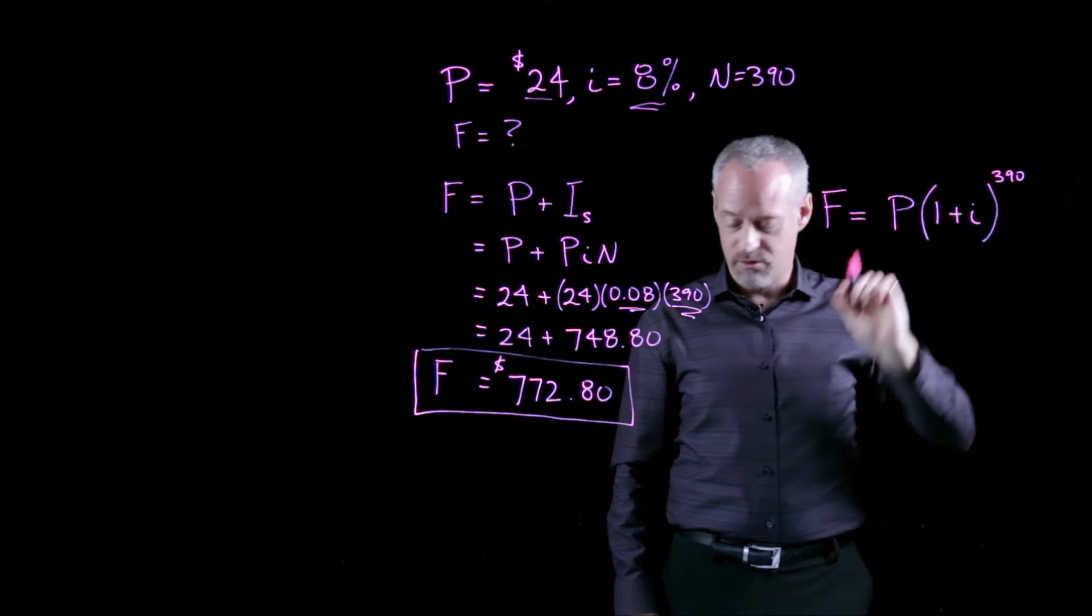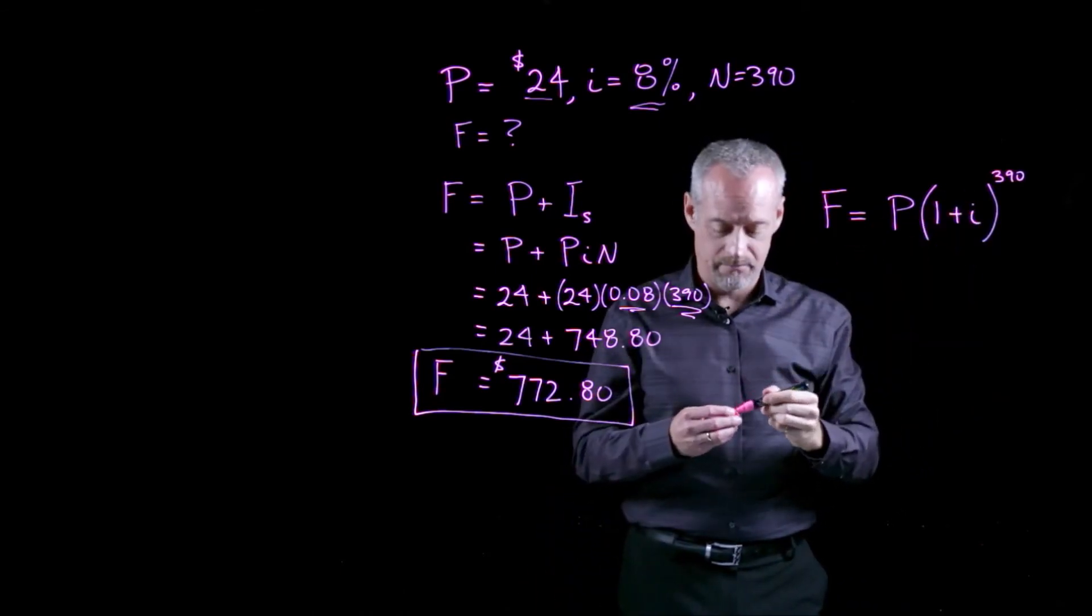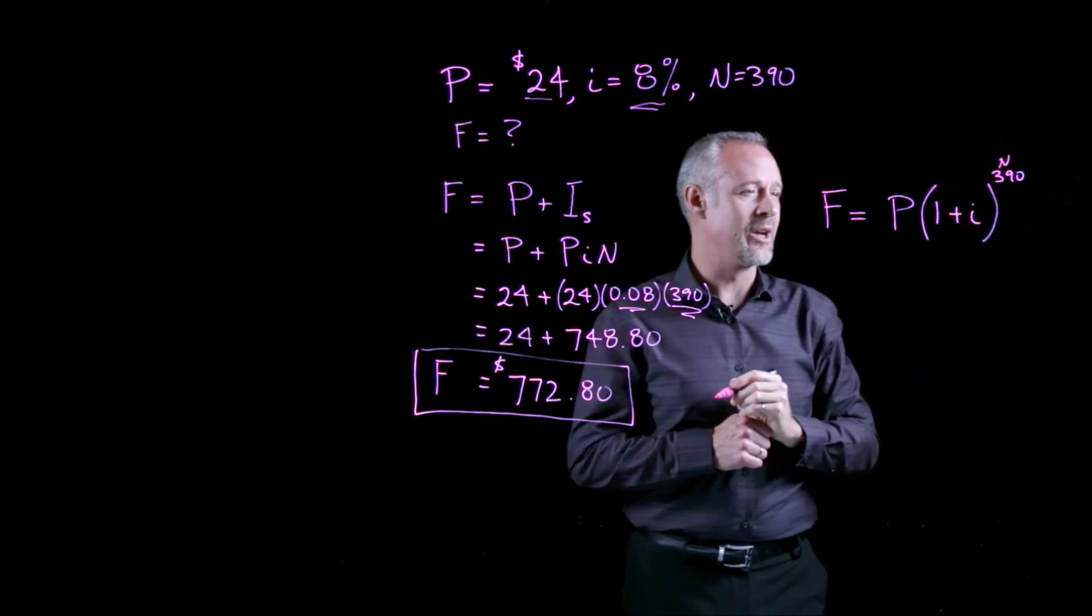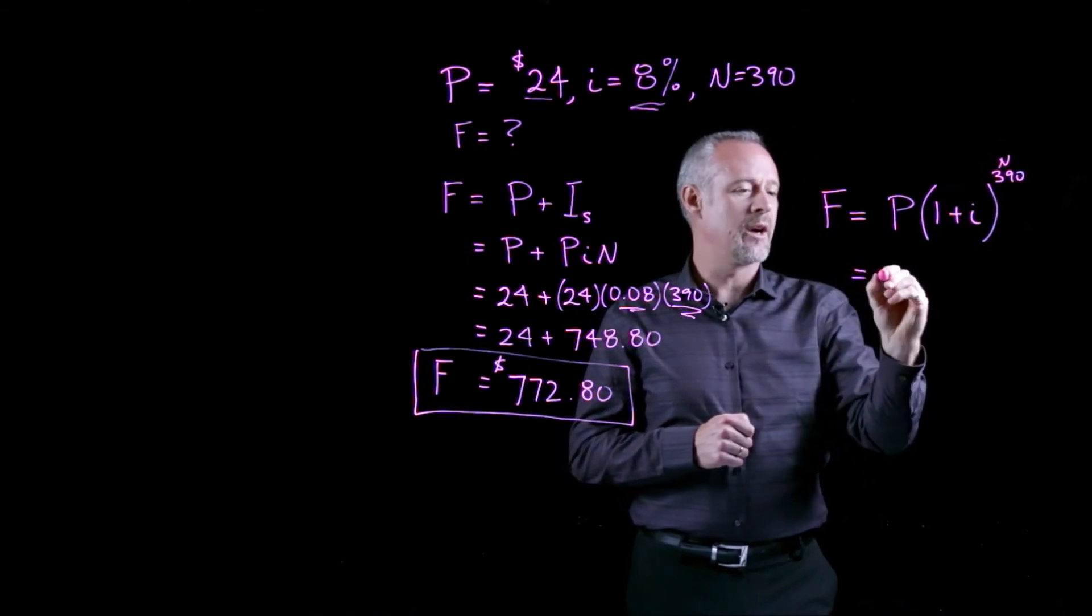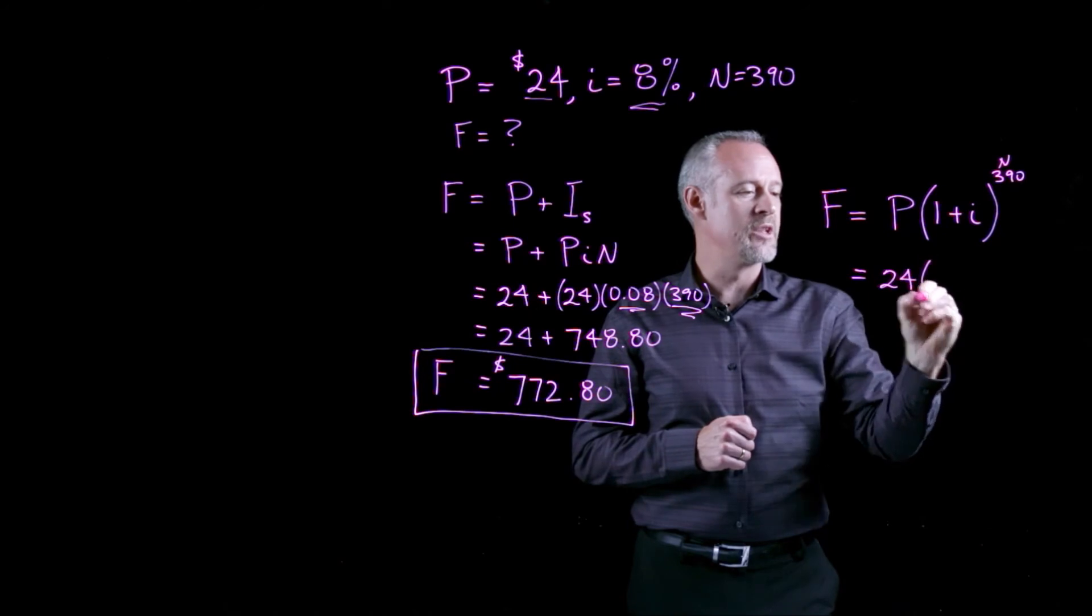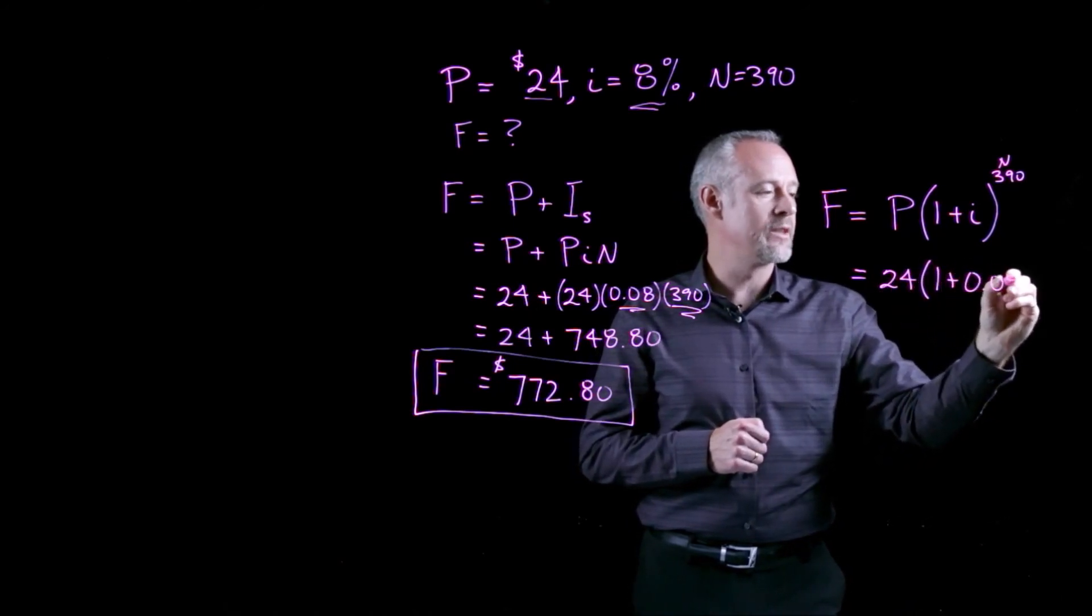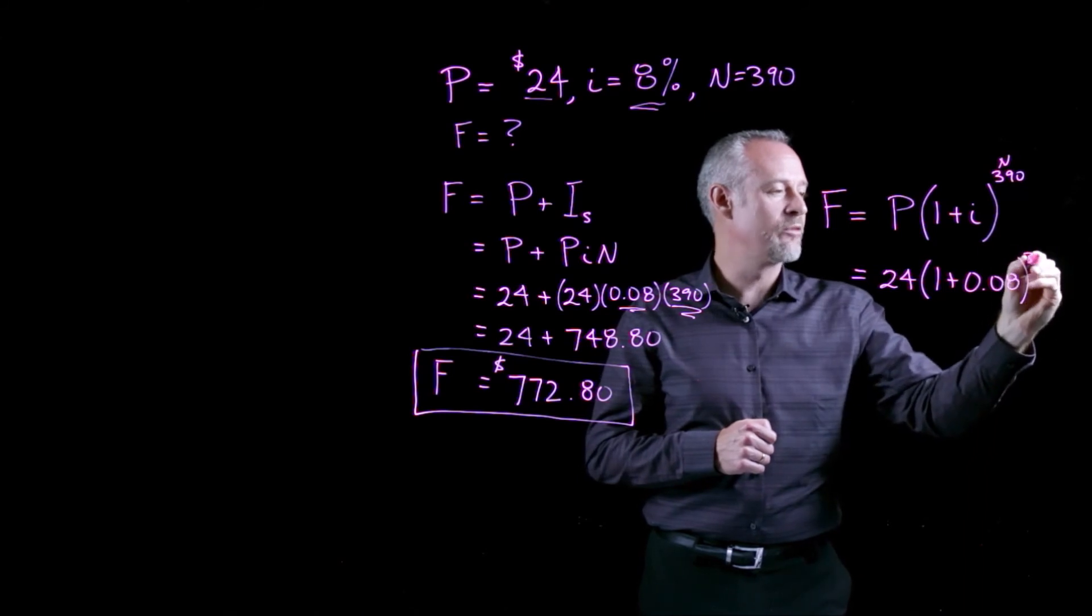So, or actually, I should write that as N. And we'll just do that. So, I plug these numbers in, I've got $24, the amount of the initial investment, plus the 8% raised to the power of 390.